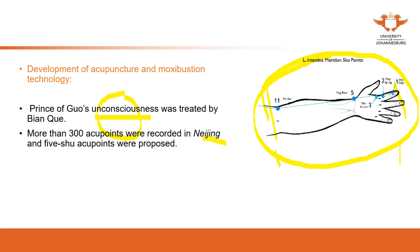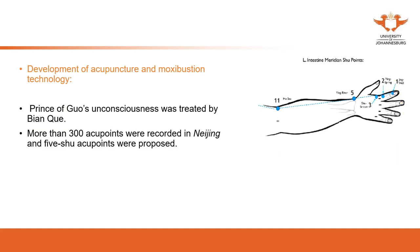The yuan-source points were also proposed during this period, along with various needling techniques — including the reinforcing technique, the reducing technique, and methods such as thrusting, lifting, and rotating. All these theories and techniques were established during this period.